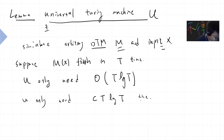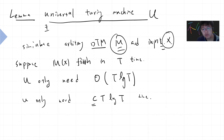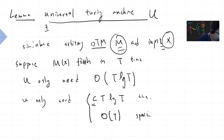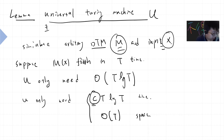The constant c in the universal Turing machine simulation is independent of the input length and also independent of M — it only depends on the original Turing machine setting, such as how many states you allow and how many alphabet symbols. You can also prove that the universal Turing machine only uses O(t) space. Once we assume this lemma is correct, we can prove the time hierarchy theorem.